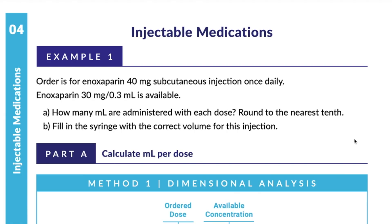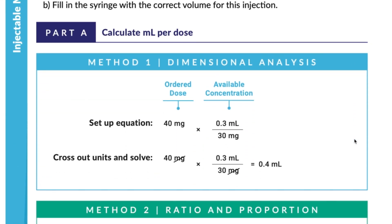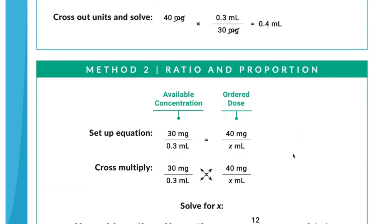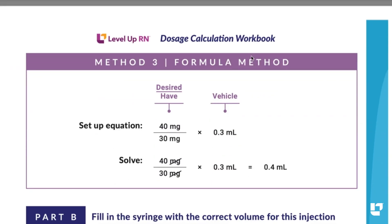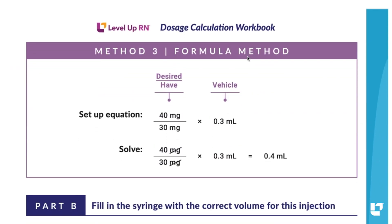In this workbook, we show example problems being solved in a variety of ways, including dimensional analysis, ratio and proportion, and the formula method. Each of these methods is color-coded throughout the book. So after you decide which method is right for you, you can easily pick that method out in the workbook and skip past the other methods.